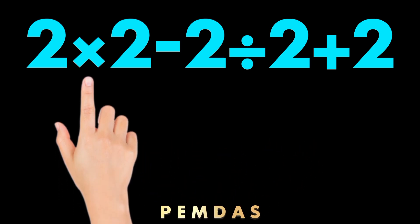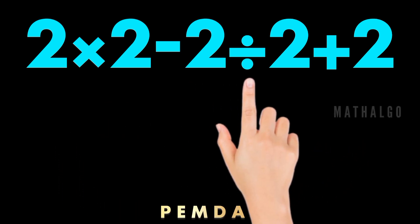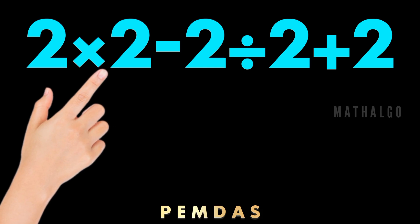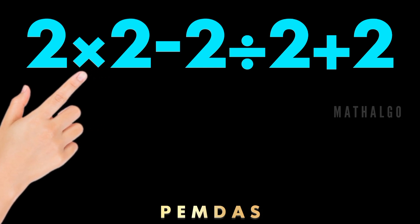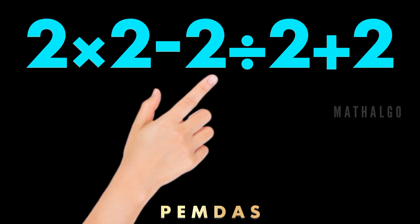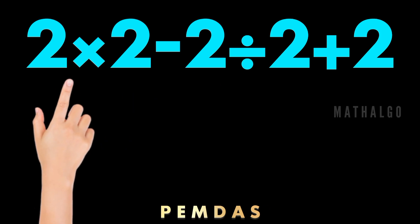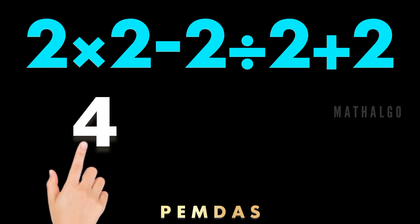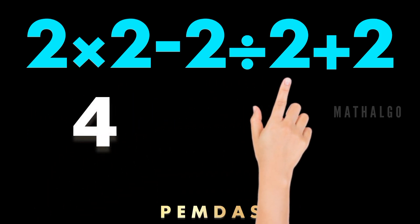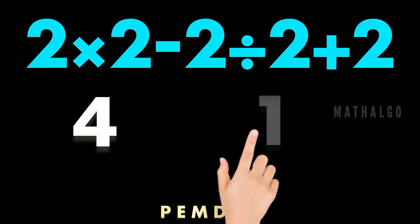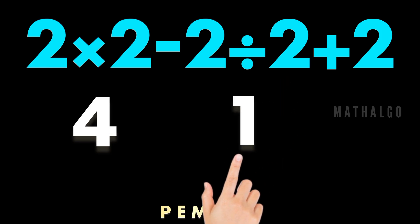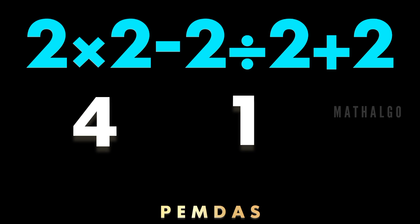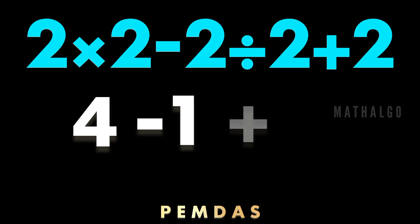Step 1: Multiplication and division come first, and we solve them from left to right. 2 times 2 equals 4. Then 2 divided by 2 equals 1. Now our problem becomes 4 minus 1 plus 2.